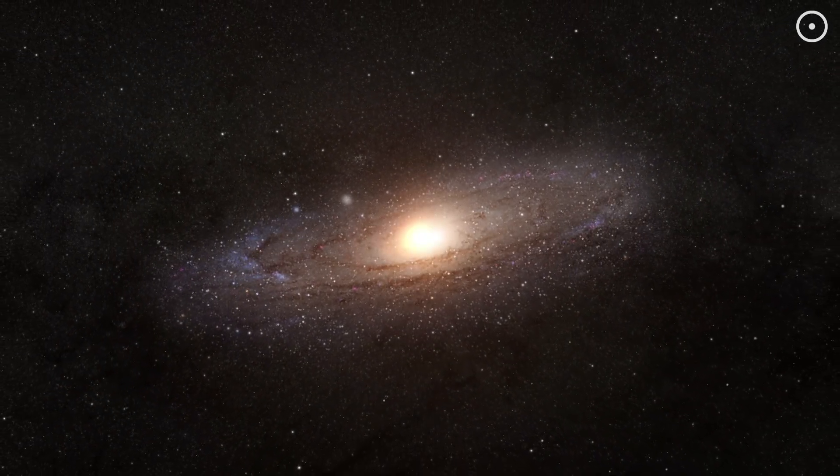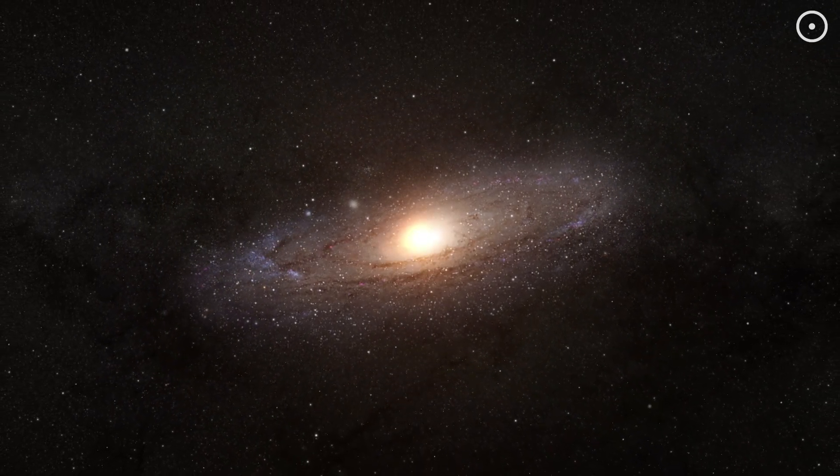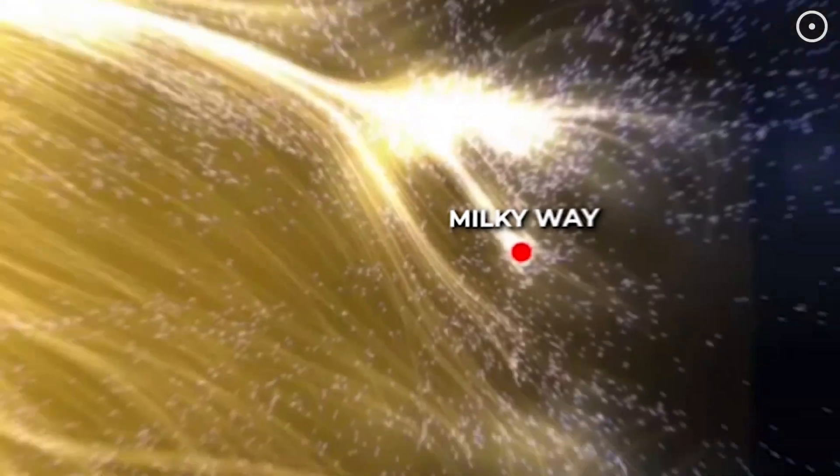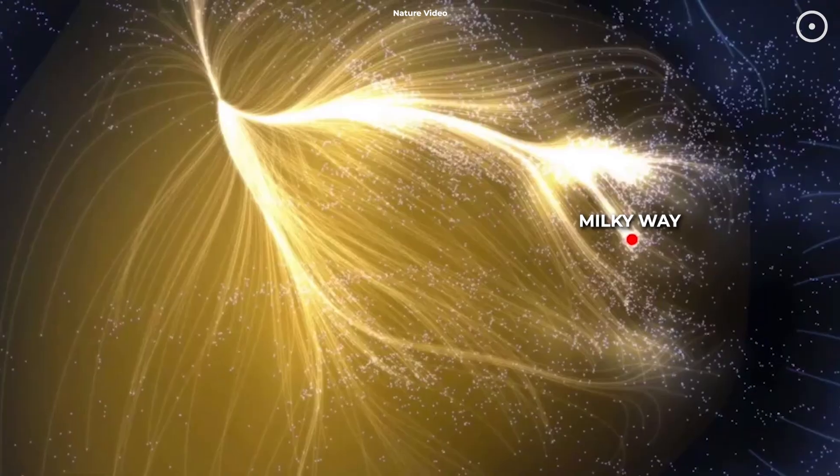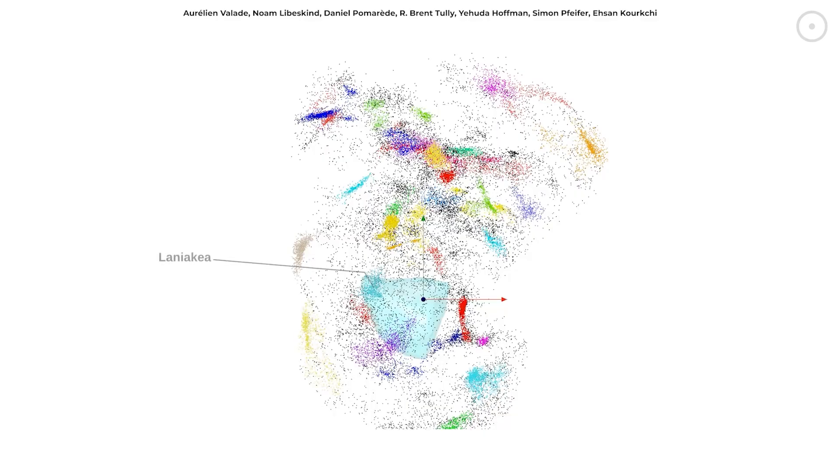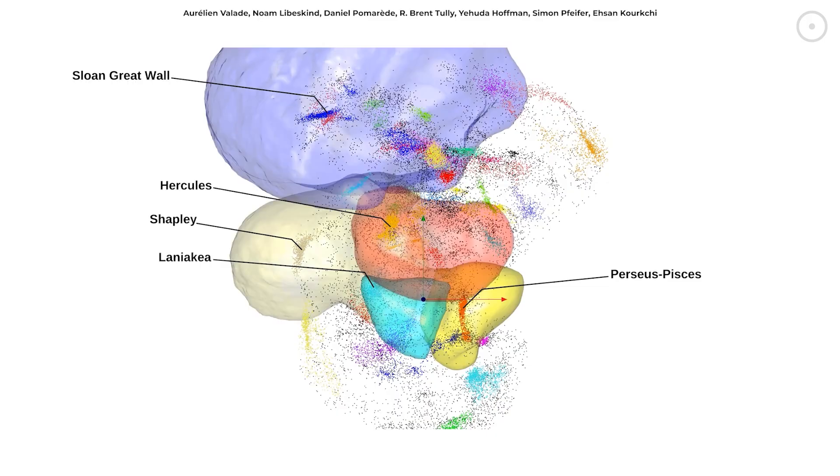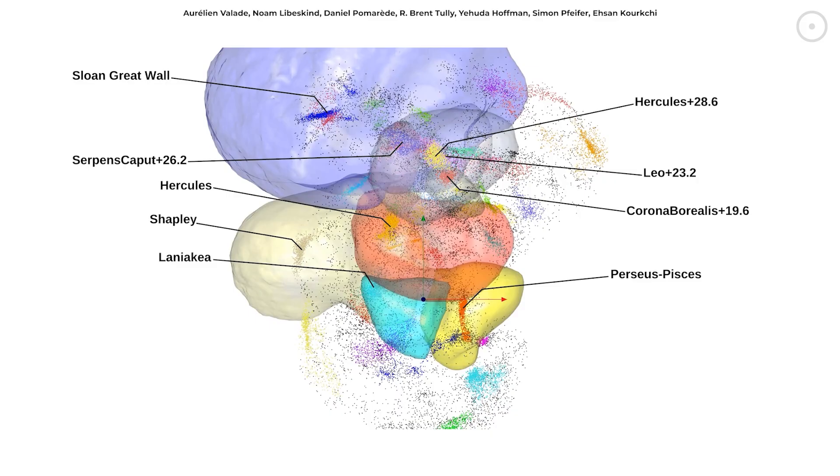Let's break this down layer by layer. We start with our galaxy, the Milky Way. Then we have our supercluster, Laniakea, which we thought was enormous. But the Shapley concentration? It contains multiple Laniakea-sized structures. The mass of this thing? It's so large that our usual units of measurement feel pointless.